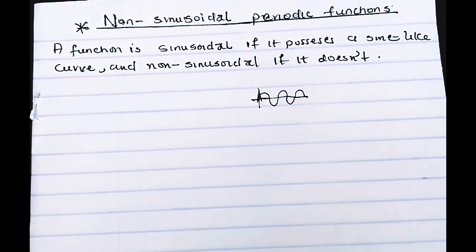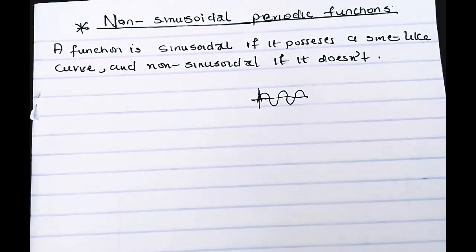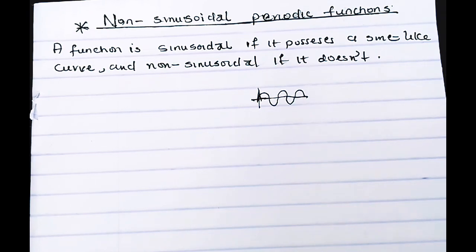The functions which possess these curves are called sinusoidal functions. Non-sinusoidal functions are basically otherwise — if you see a curve that is not a sinusoidal curve, then it's a non-sinusoidal curve, which is as simple as that. The functions are then called non-sinusoidal functions.